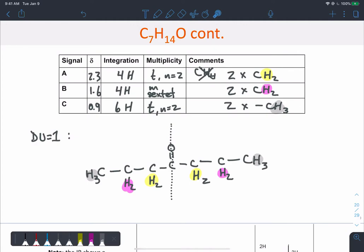Okay, double-check that that fits all the data. So we've got these protons A around 2, that makes sense, they're next to the carbonyl group. 1.6, alkyl protons some are removed from that carbonyl group, and then alkyl protons at about 0.9. There we go, so there's the molecule.